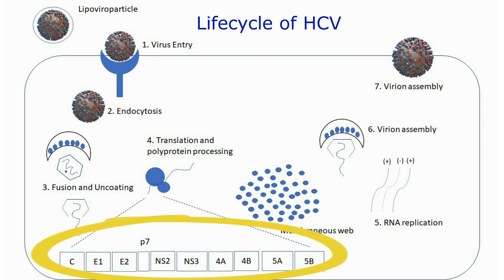After uncoating, the positive-strand RNA genome is released into the cytoplasm. The genomic RNA is directly translated into a polyprotein precursor that is then cleaved into single proteins by both host and viral proteases.